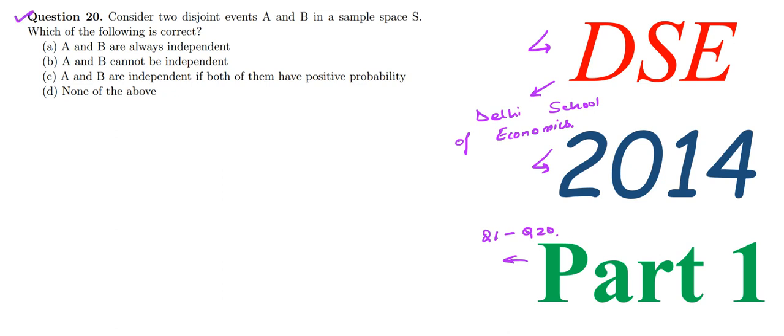Here we have considered two disjoint events A and B in a sample space S — which of the following is correct? So here we have been given two disjoint events. Disjoint events basically means when both of these cannot occur together — the intersection of these two is always 0. A intersection B will equal 0, meaning these two cannot occur simultaneously. Let's check the options.